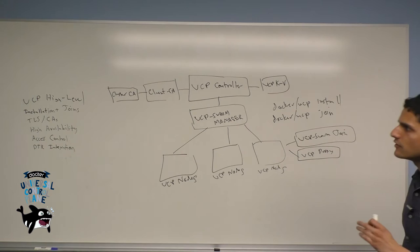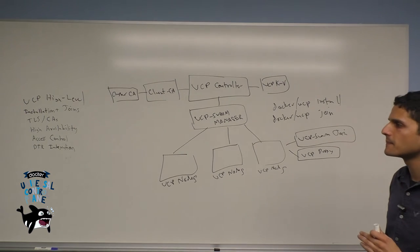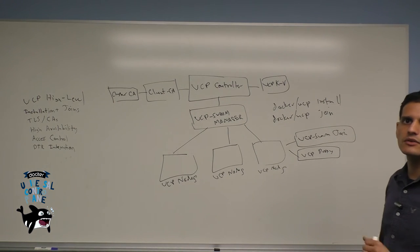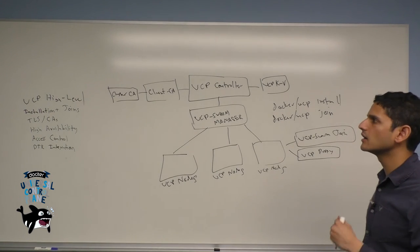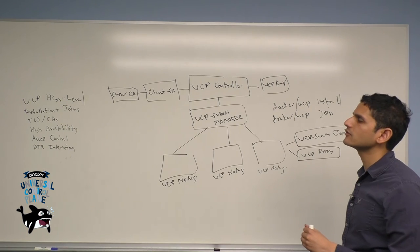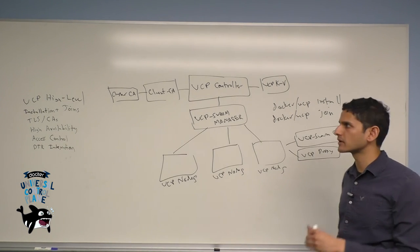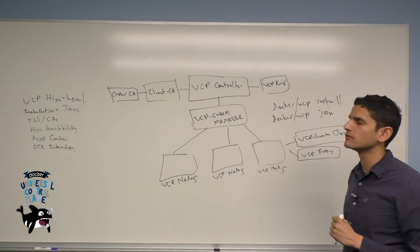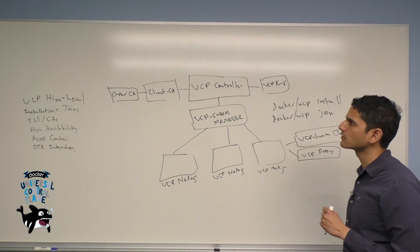These serve two very different purposes. The purpose of the client CA is to sign new user bundles, basically to provide authority and authentication for individual users, as well as to add new replica nodes, which we'll talk about in the high availability section, to the UCP controller.